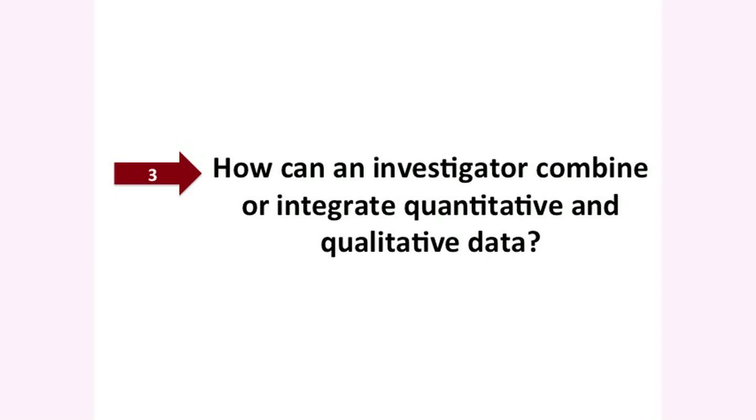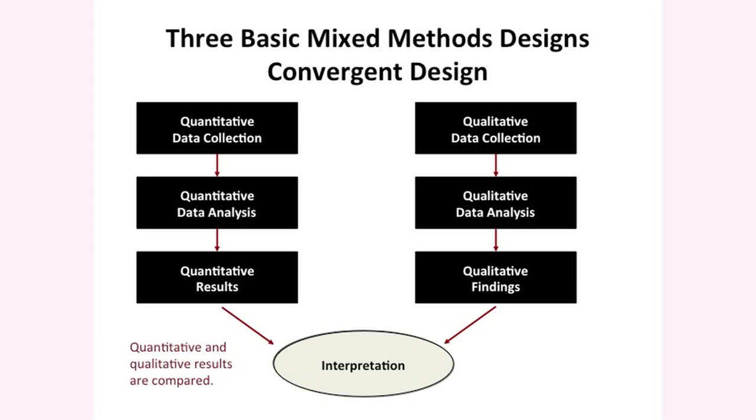Third — and this is maybe one of the most important and confusing parts — we need to integrate these two forms of data; we need to bring qualitative and quantitative together. There are some designs in the mixed methods field that have emerged over the last 20 years. The first we call a convergent design: we collect quantitative data and analyze it, and at the same time collect qualitative data and analyze it — for example, a survey and an open-ended interview. We then merge the data and compare the results to see whether they are comparable. That's a convergent design.